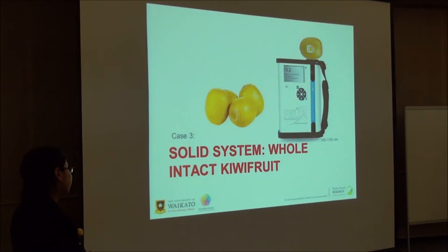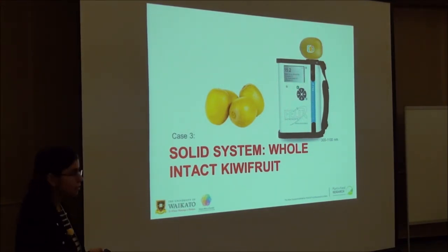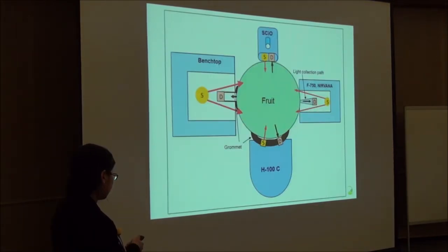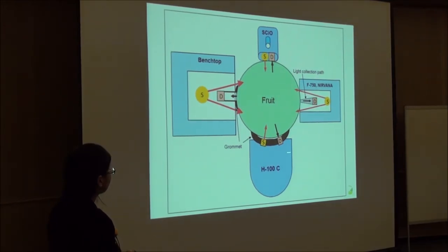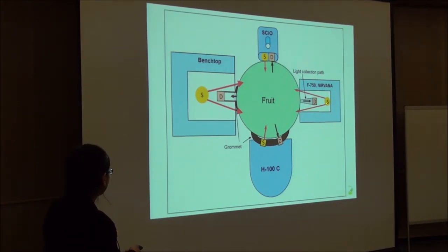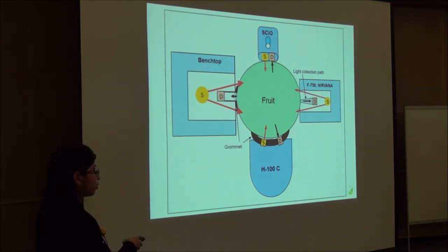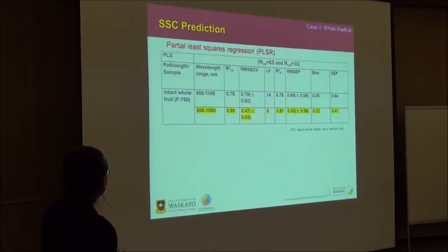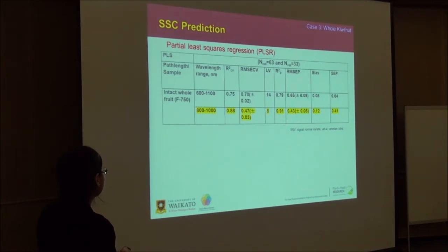Next is the solid system — the whole intact kiwifruit. It works in the silicon range, using a portable silo instrument and benchtop. It is an interactance setup, so the source and detector are on the same side, which is what makes the whole system portable. Using just the water wavelengths gave good prediction accuracy compared to the full 600 to 1100 nanometer range.